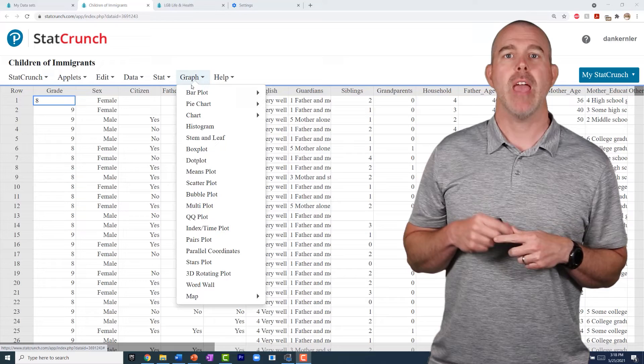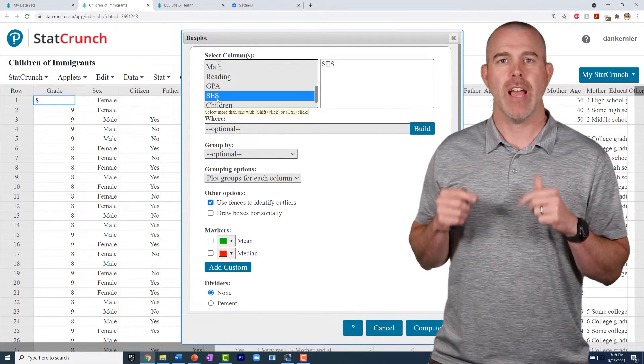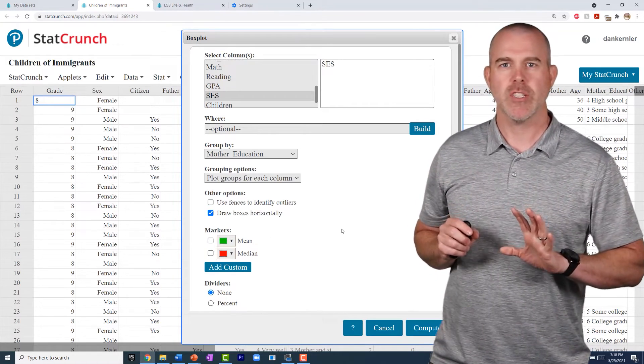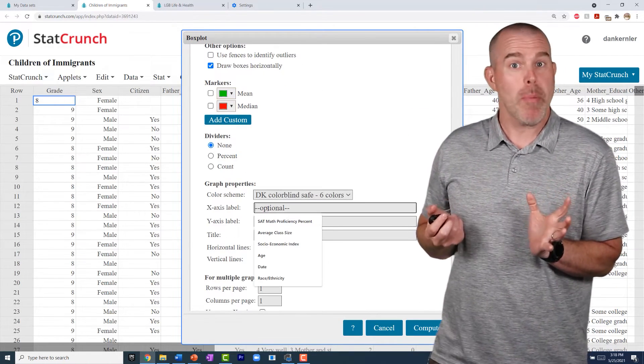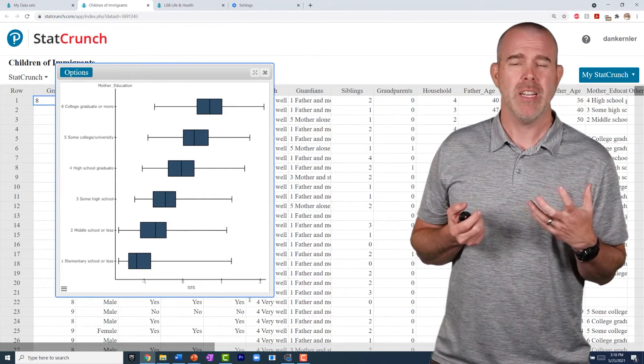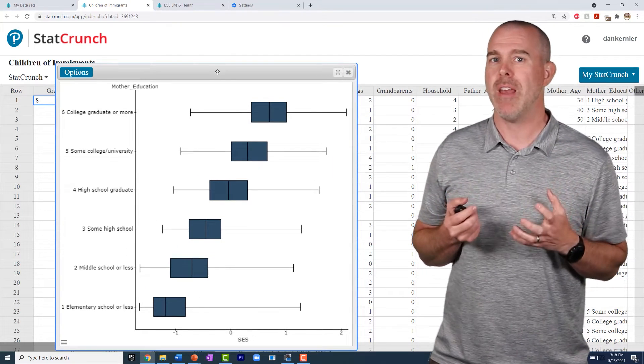So what I did is, let's make a box plot of SES by mother's education. So we'll go to graph, box plot, and we'll choose SES, and then we're going to group by mother's education. I'm not going to do all the titles and stuff for this analysis, but you can see here, there appear to be a difference. Let's dive in a little bit deeper, and we have to check before we do the ANOVA if we meet our criteria.